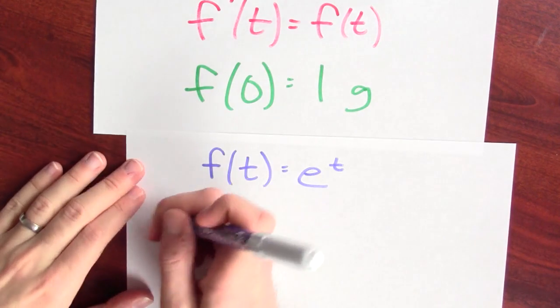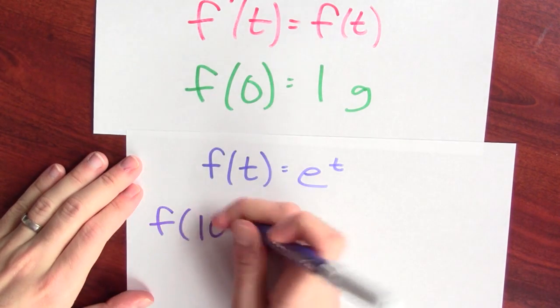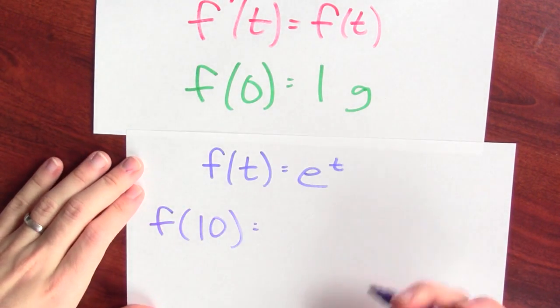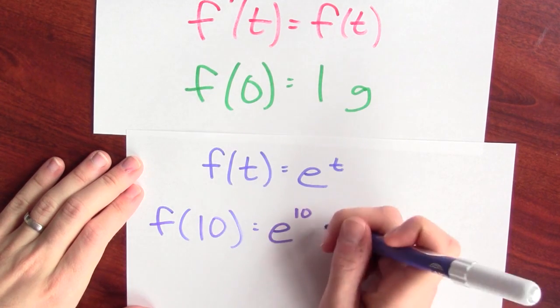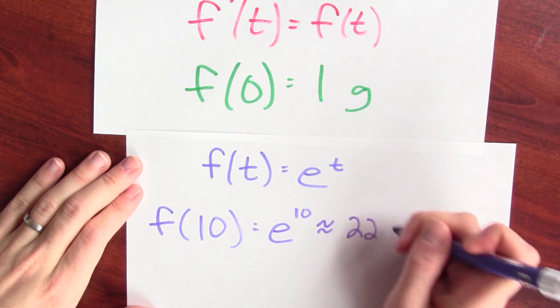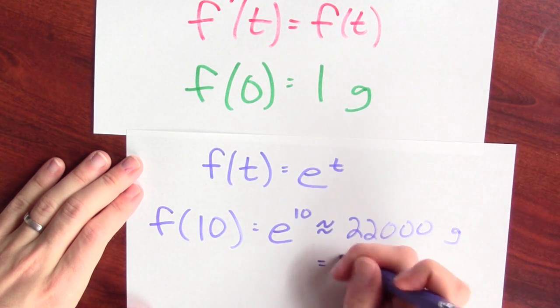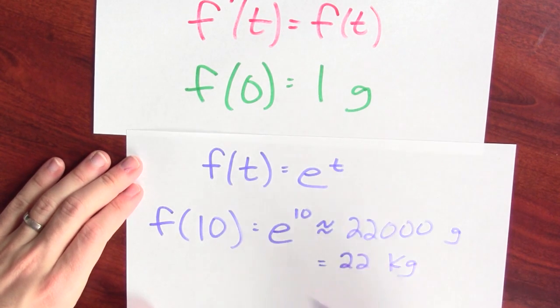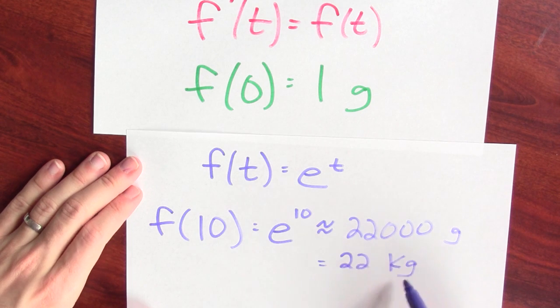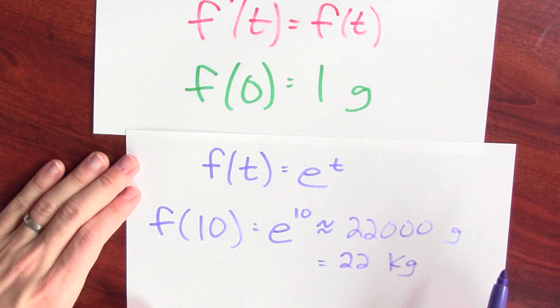How much gray goo is there after ten seconds have elapsed? That means I want to calculate f of ten seconds. That's e to the ten, which is approximately 22,000 grams. And 22,000 grams is 22 kilograms. After ten seconds, there's about 22 kilograms of gray goo.